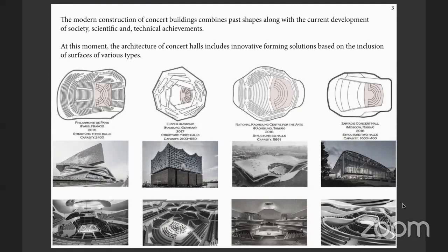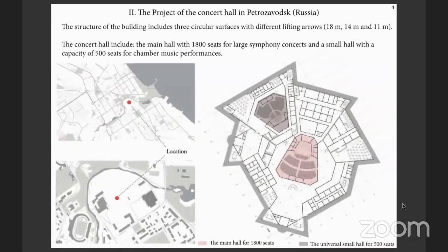The Philharmonic de Paris, the National Center for the Arts, the Elbphilharmonie with the radio concert hall, etc. For my project, a concert hall in the city of Petrozavodsk was designed with three circular surfaces with different lifting arrows: 18m, 14m, and 11m respectively. The concert hall includes a main hall with 1,800 seats for a live symphony concert and a small hall with a capacity of 500 seats for chamber music.